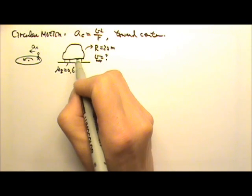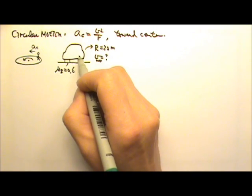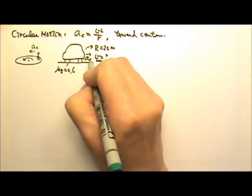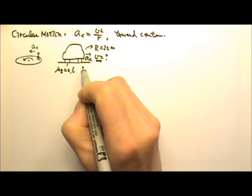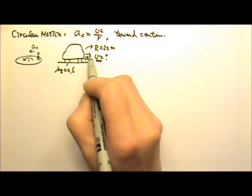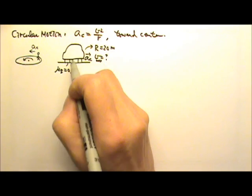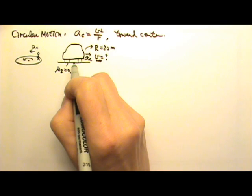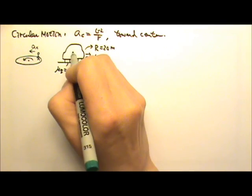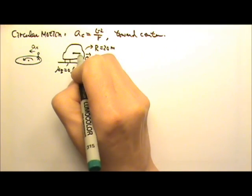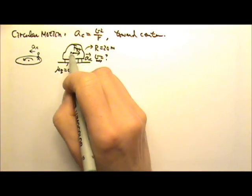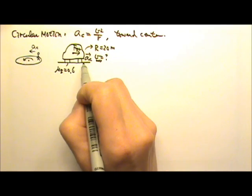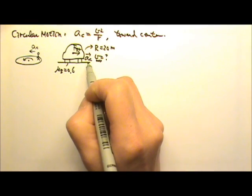The same applies to the car. If the car is on a horizontal road making a circular turn, the acceleration goes towards the center — a horizontal acceleration. It cannot be provided by gravity or the normal force because they are vertical. So the only horizontal force on the car is friction, which points towards the center.